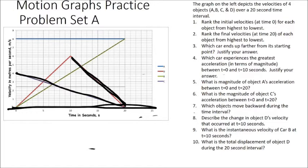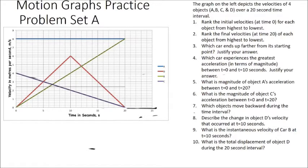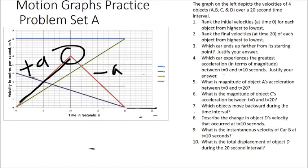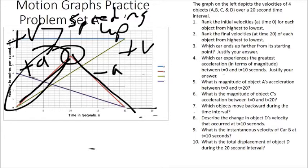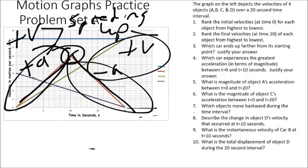Question 8: describe the change in object D's velocity that occurred at 10 seconds. At 10 seconds, the object went from having a positive slope — meaning positive acceleration — to having a negative acceleration. In the first 10 seconds, velocity was positive and acceleration was positive, so the object was speeding up. From 10 seconds onward, the velocity is still positive but the acceleration is negative, meaning the object is slowing down.